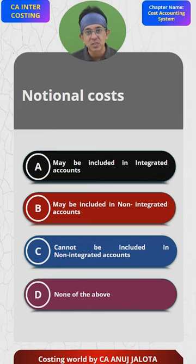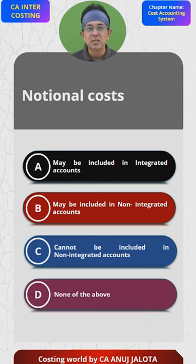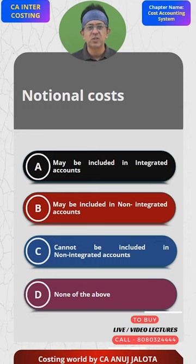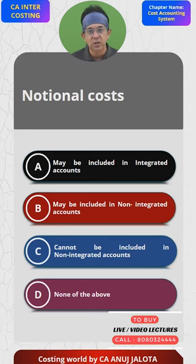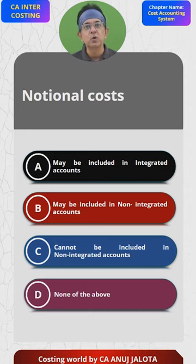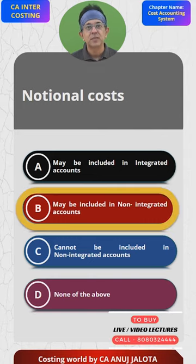Such things are only possible where costing books are maintained separately. So the answer should be B — may be included in non-integrated accounts — because in non-integrated accounts, costing and financial accounts are kept separate. In costing books you can include notional rent. Obviously this cannot appear in financial accounts, where we only write down expenses actually incurred. So the answer is B.